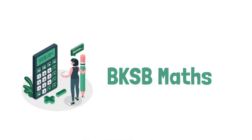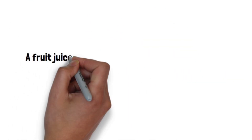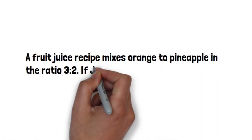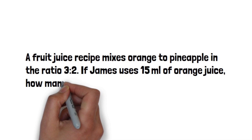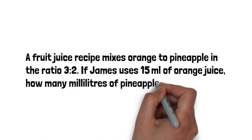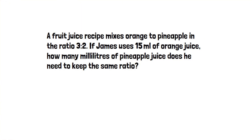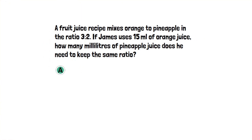BKSB test sample questions. BKSB Maths question: A fruit juice recipe mixes orange to pineapple in the ratio 3 to 2. If James uses 15 milliliters of orange juice, how many milliliters of pineapple juice does he need to keep the same ratio? Option A: 5 milliliters. Option B: 7.5 milliliters. Option C: 10 milliliters. Option D: 15 milliliters.